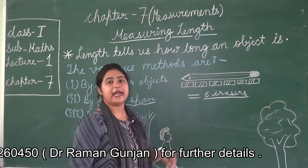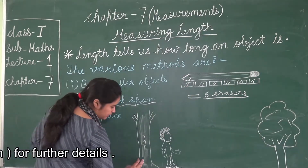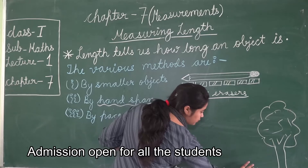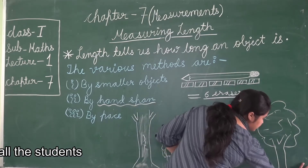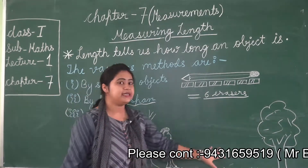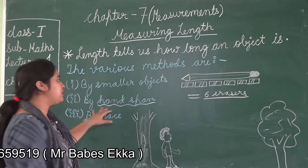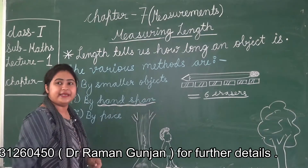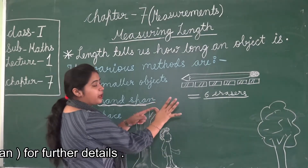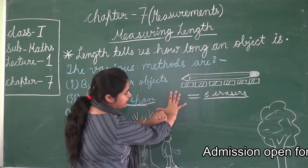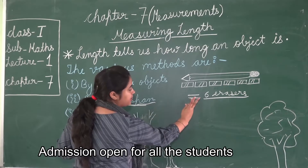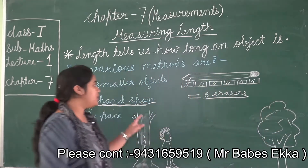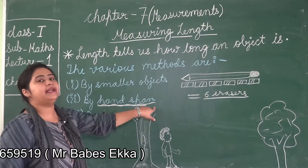If you have to measure this board using hand span, you will measure it like 1, 2, 3, 4, 5, 6, and 7. So we can say the length of the board is 7 hand spans. Now you understand the meaning of hand span - from your thumb finger to your last finger. You place your thumb at the starting point and measure step by step: one hand span, two hand spans, three, four, and so on.